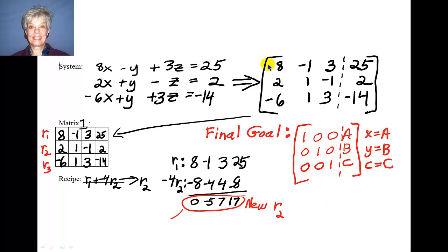So the first thing I do is make an augmented matrix. Here it is. And I'm going to use these tables. Row 1 will consist of 8, negative 1, 3, and 25. Row 2 will consist of 2, 1, negative 1, 2. And row 3 will consist of negative 6, 1, 3, and negative 14. And my goal is going to be, as I move in this direction to get to the final matrix, to put a 0 where the 2 is right now in row 2.